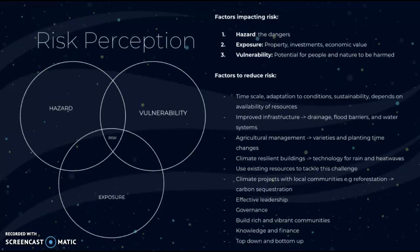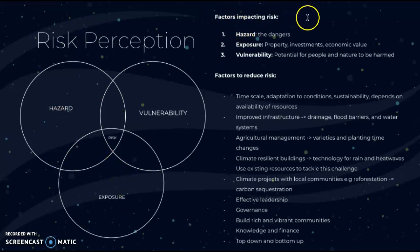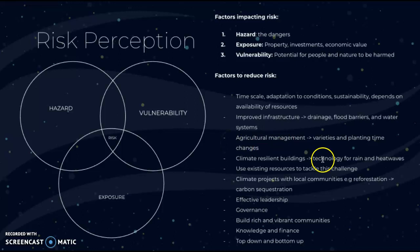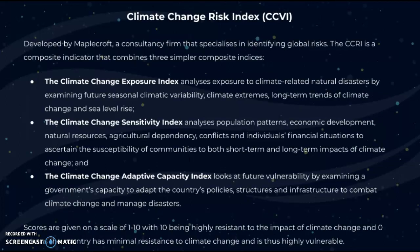Now we're going to think about the idea of risk perception. Risk is composed of hazard, vulnerability, and exposure. The factors impacting risk include: hazard — the dangers; exposure — property, investments, and economic value; and vulnerability — the potential for people and nature to be harmed. There are also factors that may reduce risk, which are strategies to reduce climate change risk taking into account all of these different factors.